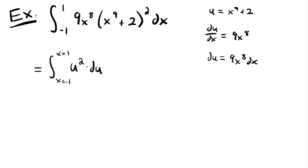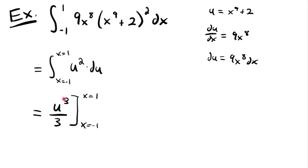Using the power rule for integration, we add 1 to the exponent and divide by the new exponent. This gives u to the power of 3 divided by 3, evaluated from x equals negative 1 to x equals positive 1.